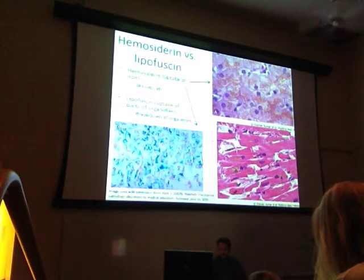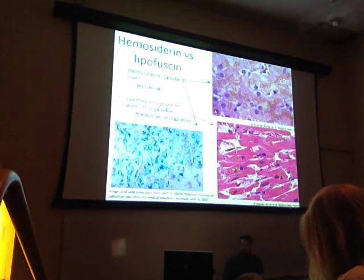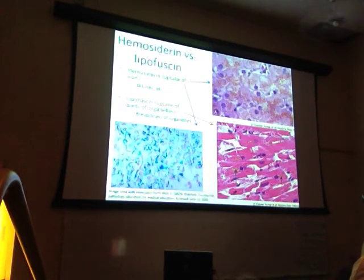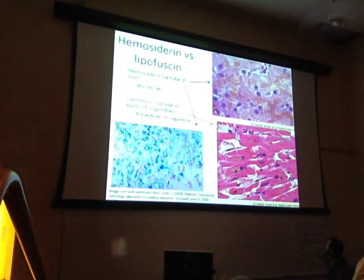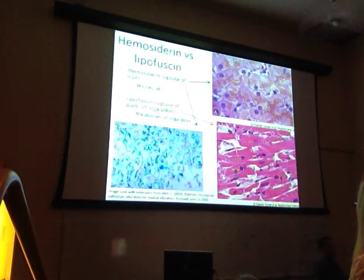Lipofuscin is another example — seen in the lower right image. Lipofuscin is due to the breakdown of cellular organelles over time. This is cardiac muscle, and the lipofuscin deposits are denoted by the black arrows. The breakdown of organelles over time leaves these residual lipofuscin streaks, which are an indication of wear and tear of cardiac muscle. These are two aging pathologies.